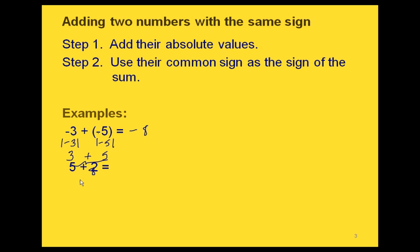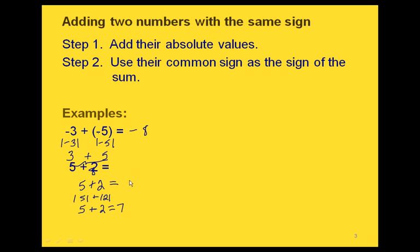Another problem: if we have positive 5 plus positive 2, we could go ahead and add these two and get 7. But if we think about what we just did, we'd look at the absolute value of positive 5 plus the absolute value of positive 2. The absolute value of 5 is 5, and the absolute value of 2 is 2. So we get 7. Our final answer for our original problem is going to be 7 with the sign that these two original numbers had in common, which was a plus sign. So this would be positive 7.